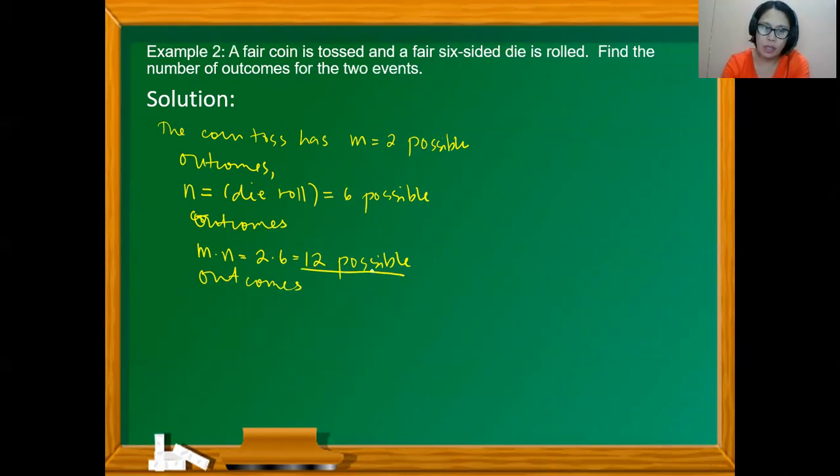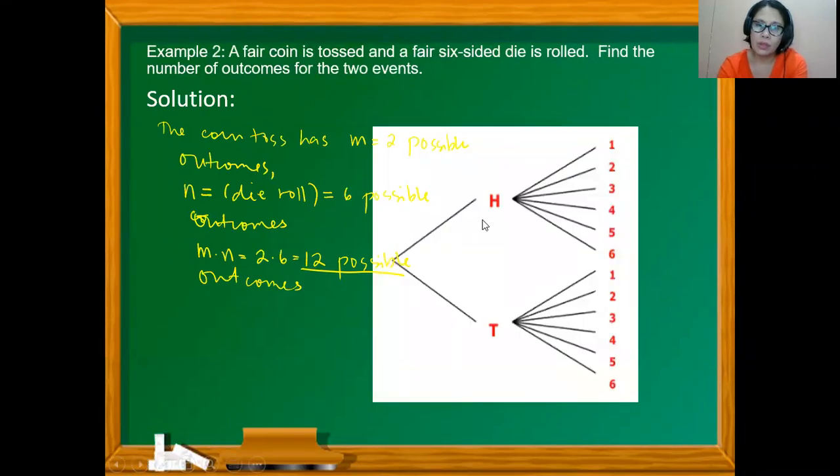So which can be illustrated by this tree diagram. So if you're going to count, there are really 12 possible outcomes. So from head 1 until tail 6, so we have 12 possible outcomes for that.